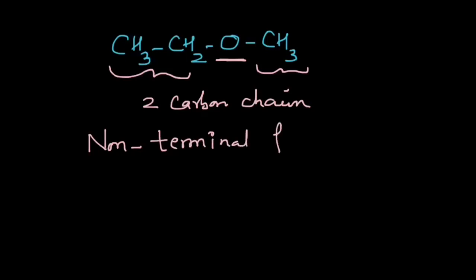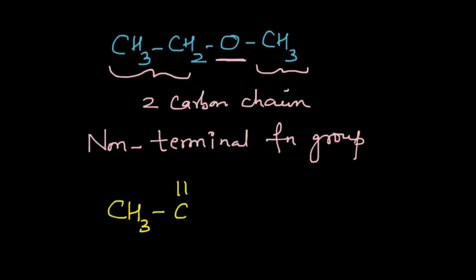Another example of a non-terminal functional group is the ketone group. If I draw acetone, you can see CH₃–C=O–CH₃, and we have carbon chains on both sides of the functional group, so it is also a non-terminal functional group.